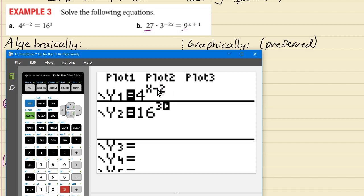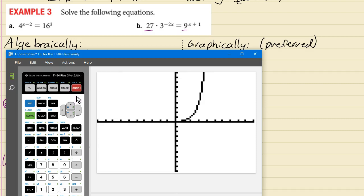So if your graph is the standard window it's just going to look like this. I have x going from x min is negative 10 x max is 10 y max is 10 and y min is negative 10. And that's not going to show the solution because the other graph 16 to the power 3 is a really really big y coordinate.